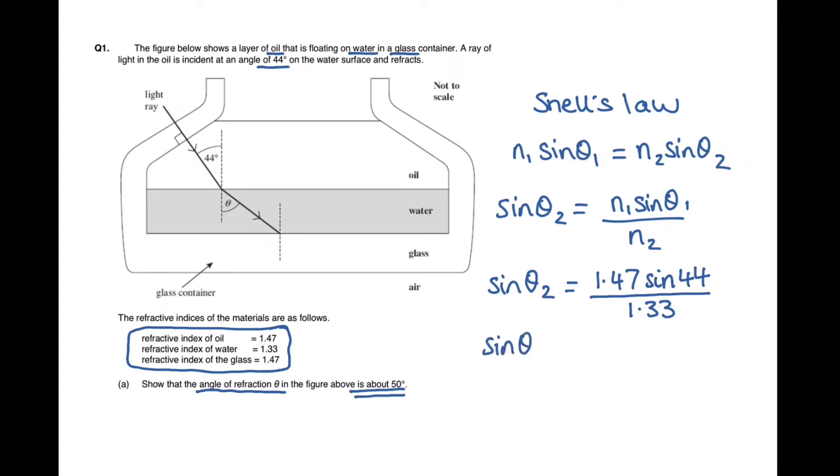So if you put these numbers into your calculator you should get out that sine theta 2 is equal to 0.768 and then to find theta 2 on its own, we do sine to the minus 1 of that answer and we get out that theta which is the angle of refraction is 50.15 degrees. Do not round straight away because they've told you it's about 50.